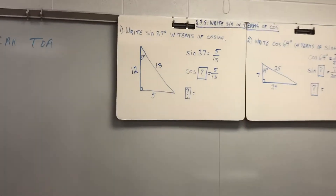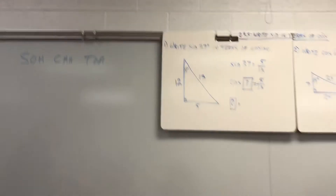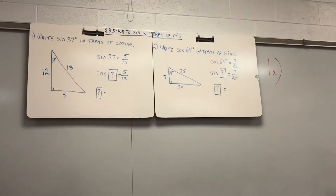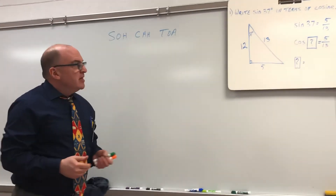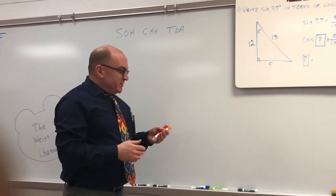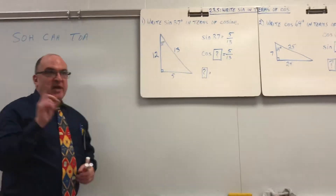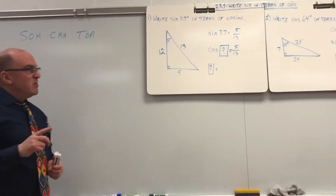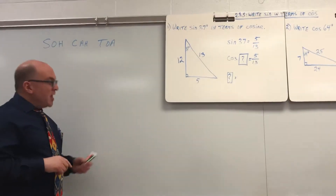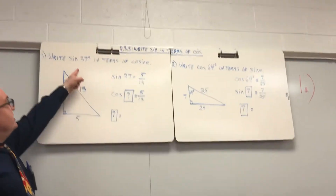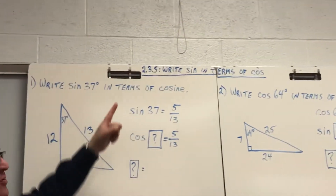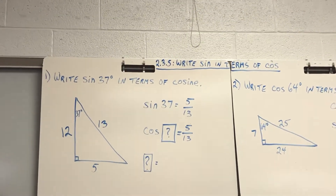Today we're going to write sine in terms of cosine and cosine in terms of sine. Very easy, but you just have to pay attention to see what's going on. For example, write sine 37 in terms of cosine.